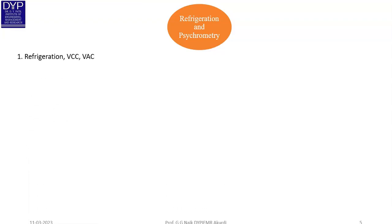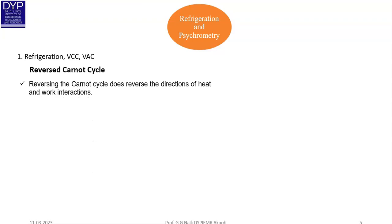Now let us start Unit 1: Refrigeration and Psychrometry, covering refrigeration, the Vapor Compression Cycle, and the Vapor Absorption Cycle. Before studying these, we need to understand the Reverse Carnot Cycle. In the first semester, Engineering Thermodynamics covered the Carnot cycle; here we need to study the Reverse Carnot Cycle. Reversing the Carnot cycle reverses the direction of heat and work interactions.